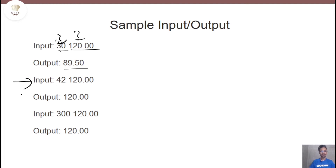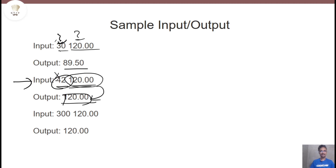Now check the second sample: the input is 42 and Y is 120. The output is 120, because she will not be able to withdraw any money. Why? Because 42 is not a multiple of 5. Also, consider the case where her account balance is 120 and she wants to withdraw 300 — that is not possible either, so she will not be able to withdraw any amount of money.